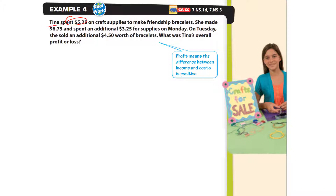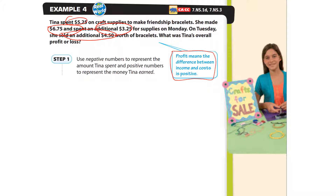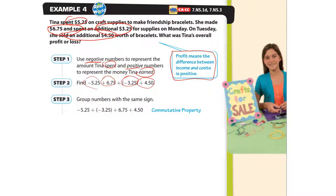Tina spent $5.25 on craft supplies, earned $6.75, spent an additional $3.25, and on Tuesday sold items for $4.50. What is the overall profit or loss? Profit means income minus cost is positive; loss means she spent more than she earned. Negative numbers represent money spent, positive numbers represent money earned. Using the commutative property, group the amounts spent — $5.25 and $3.25 — together, and the amounts earned — $6.75 and $4.50 — together.